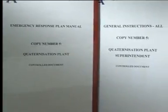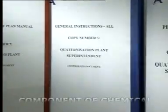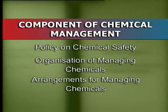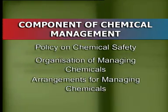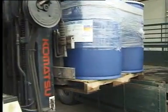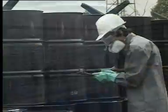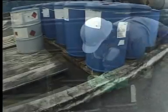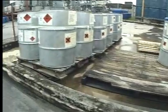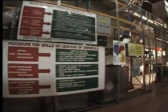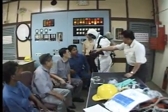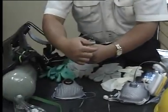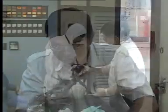Companies that handle chemicals should have a system to manage chemicals. This includes a policy on chemical safety that identifies and authorizes persons responsible to manage the chemicals. All chemicals used in the workplace should be recorded in a chemical register. There should also be a procedure on the purchasing of chemicals, and chemicals should be properly stored with incompatible chemicals separated. A chemical health risk assessment must be conducted to assess the employee's exposure to chemicals.